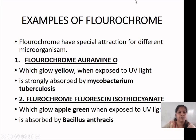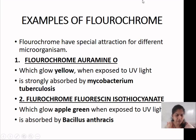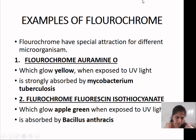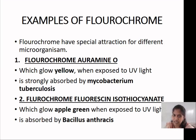Fluorochromes have special attraction for different microorganisms. The first type of fluorescent dye is auramine O, which glows yellow when exposed to ultraviolet light. Auramine O stain is used for detection of Mycobacterium tuberculosis. The organism appears yellow color under ultraviolet light.